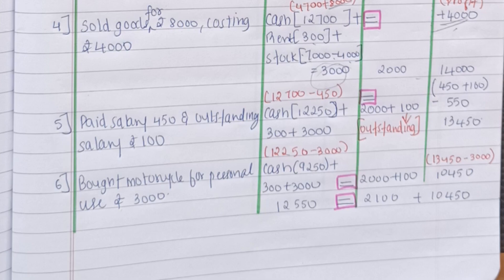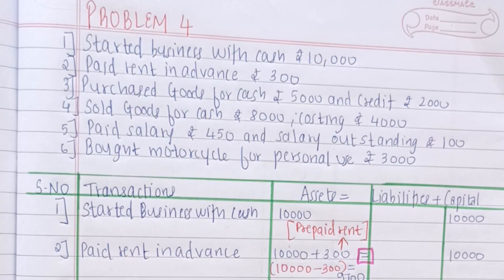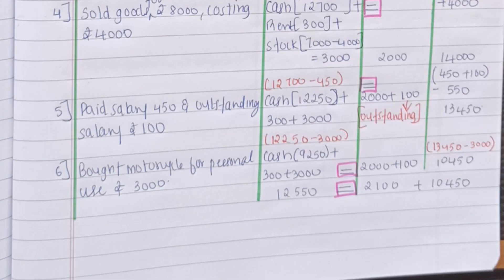So always remember that whenever it is any expense paid or any expense outstanding both the amounts have to be deducted from the capital side. So students let's move on to the sixth transaction that is bought motorcycle for personal use Rs.3000. So we know that whenever any amount or whenever any good is withdrawn from the company for the purpose of personal use it is known as drawings.